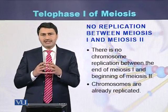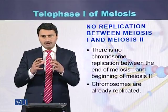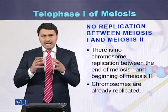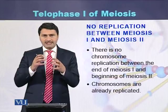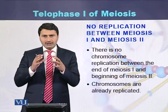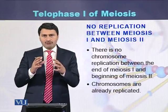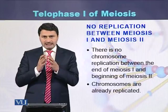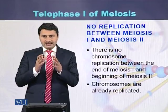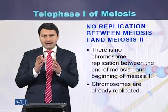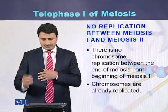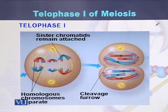There is no replication between meiosis I and meiosis II. Since the haploid number of chromosomes have arrived at each pole, there will be no replication, because in meiosis there is a single replication of chromosomes that occurs before the start of meiosis I during interphase. In this diagram we can see the telophase.